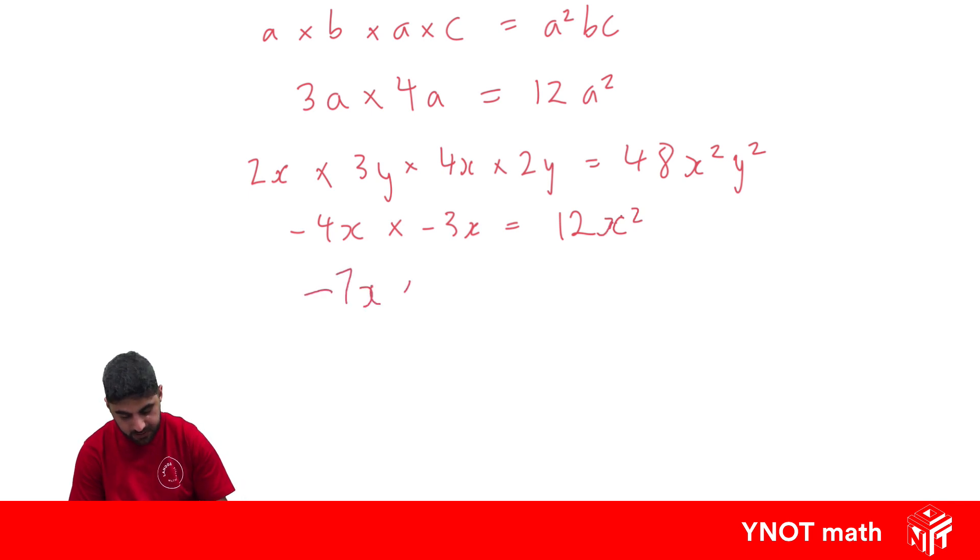Minus 7x times 8y. Well here I've got a negative times a positive. Following our integer rules, we know this is going to be a negative answer. 7 times 8 is 56. And x times y. Well they're not the same, so we just have to write xy.